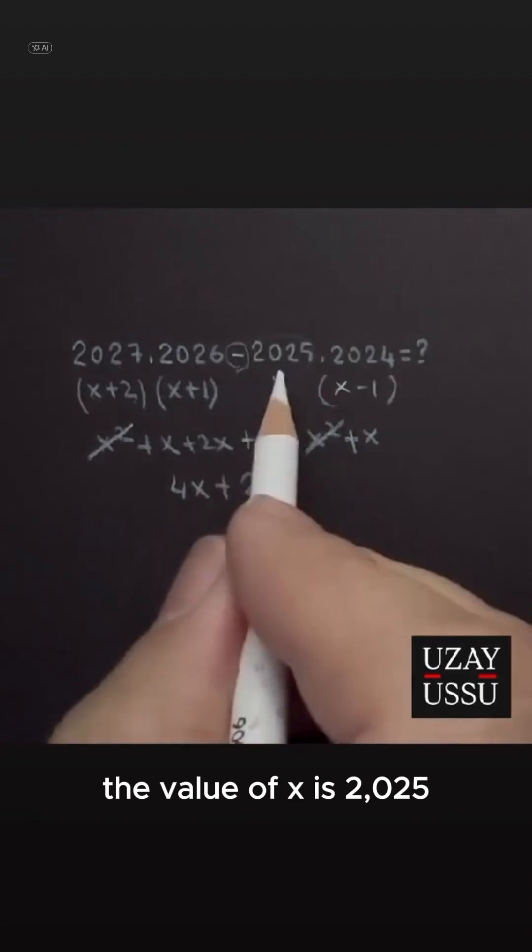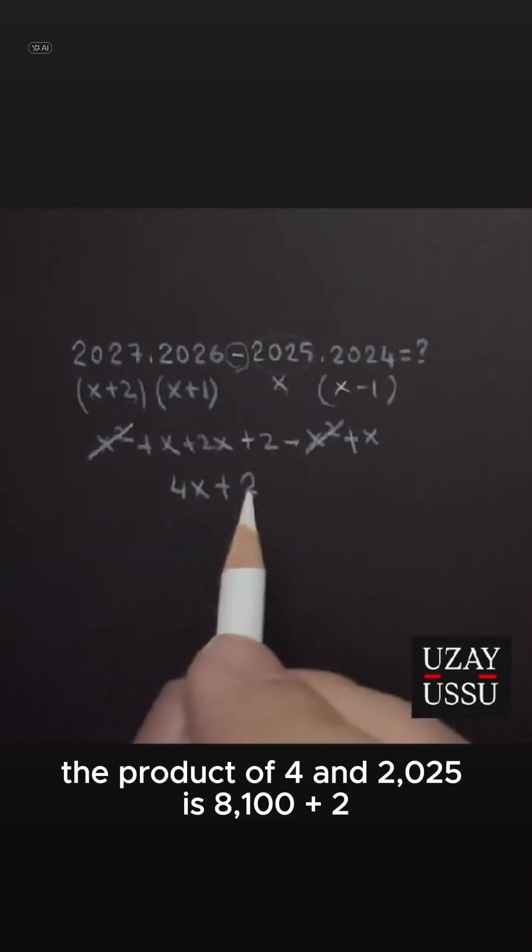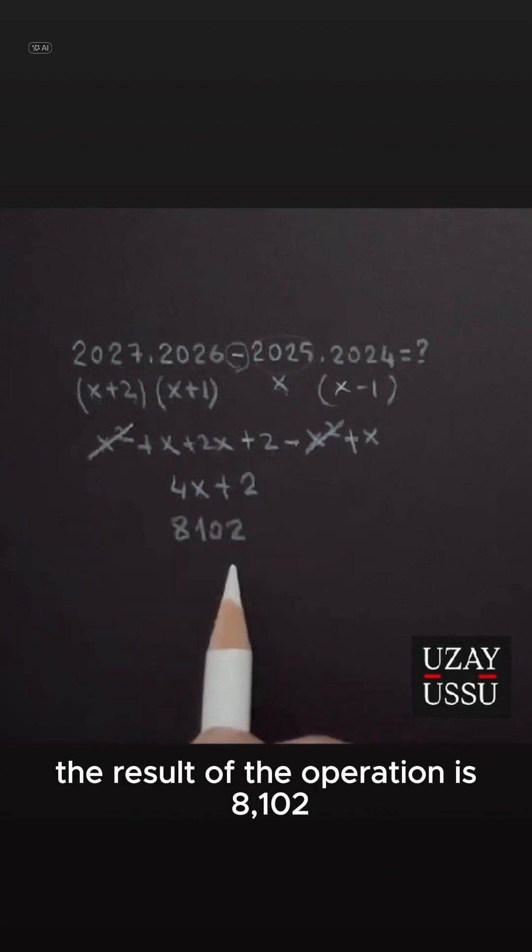The value of x is 2025. The product of 4 and 2025 is 8100, plus 2. The result of the operation is 8102.